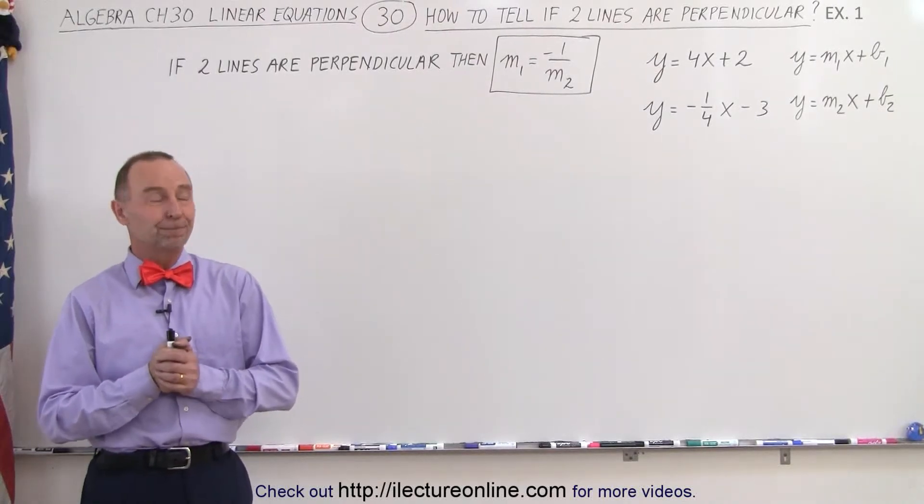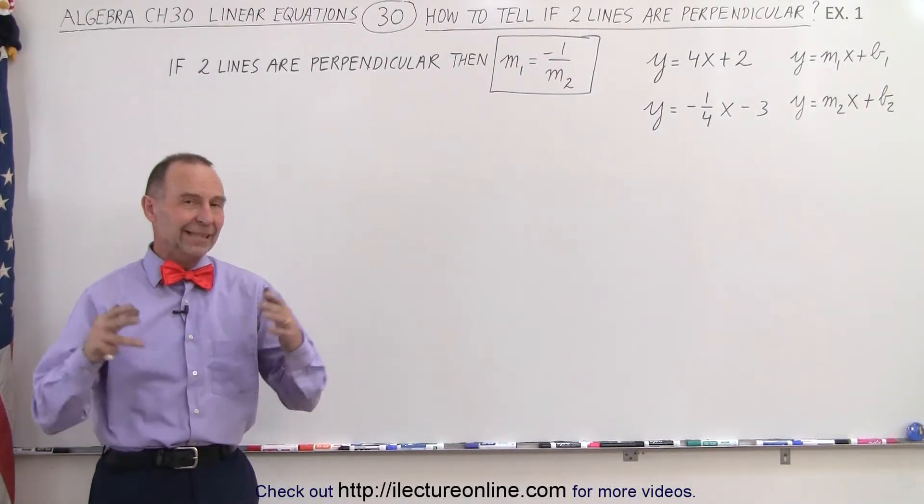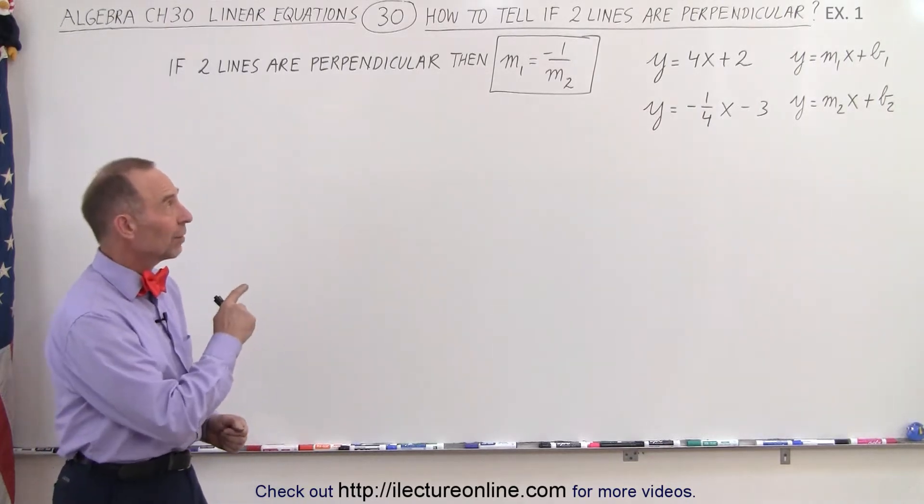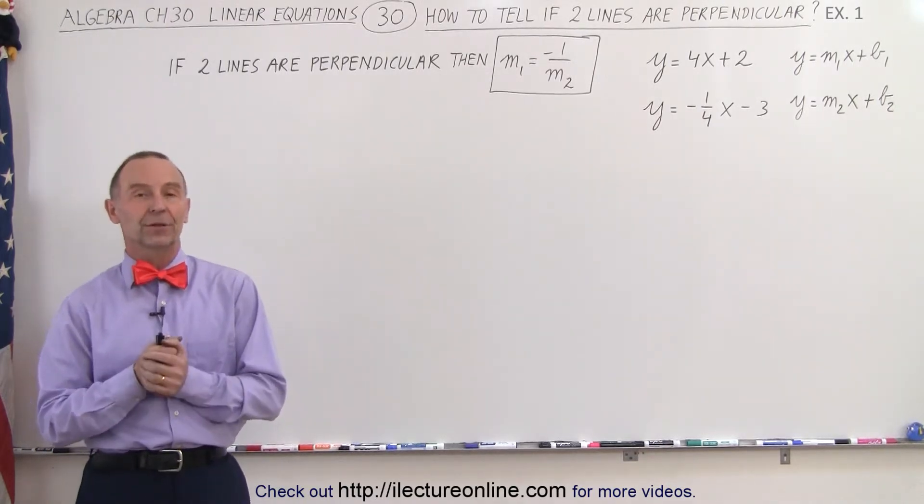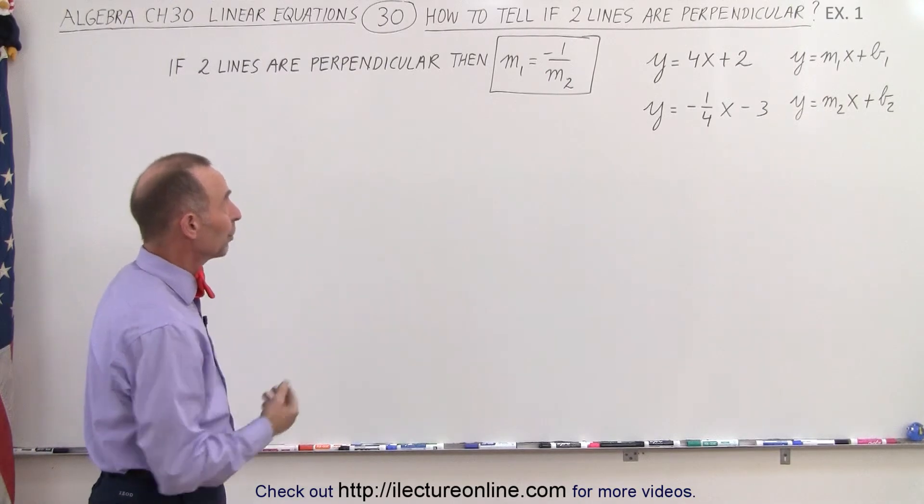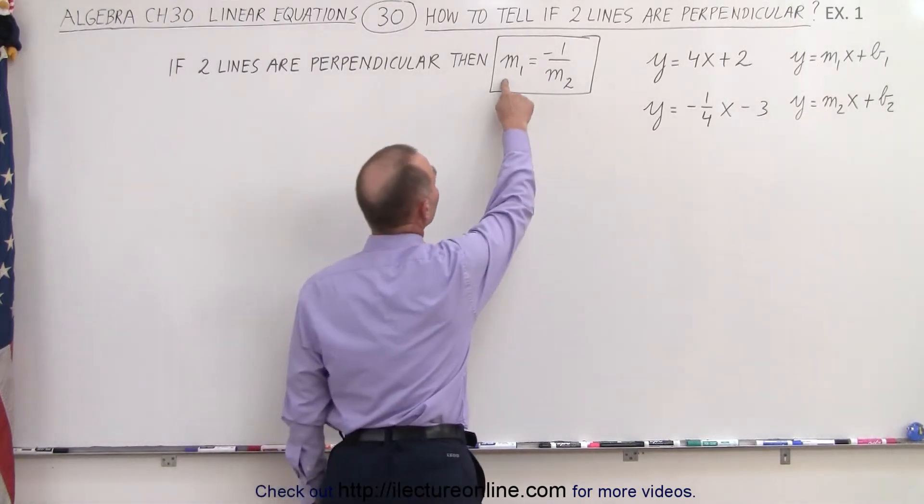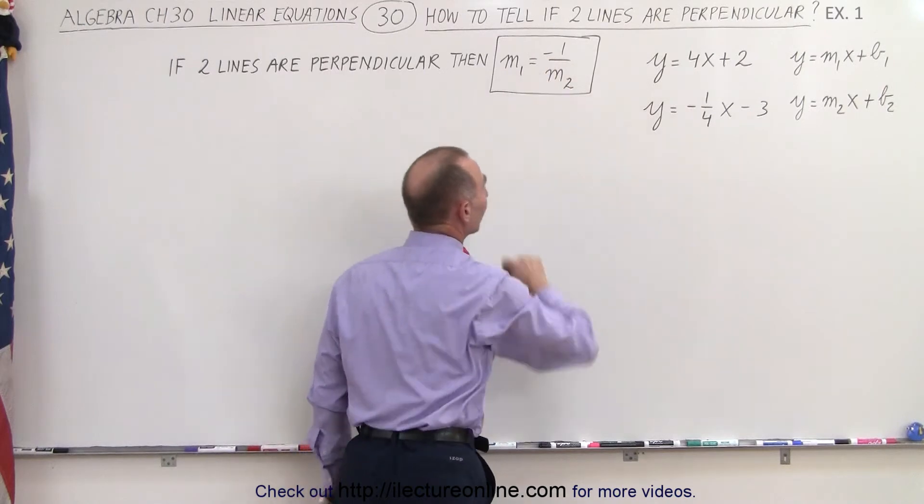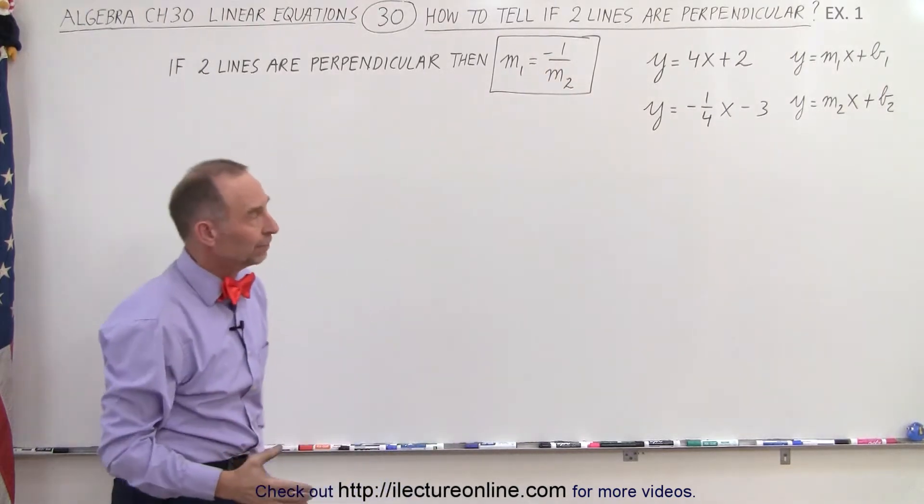Welcome to ElectronLine. The last topic in this playlist is dealing with whether or not lines are perpendicular. We find out that if two lines are indeed perpendicular, then the slope of one line equals the negative inverse of the slope of the other line.